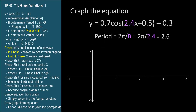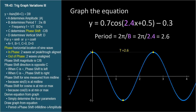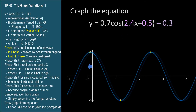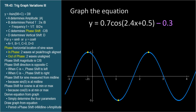Period equals 2 pi over b, and b equals 2.4, so the period is 2.6. We're graphing the cosine function, so before applying the phase shift, there will be a peak at x equals zero and another at x equals 2.6. The trough will be midway between at x equals 1.3. We'll sketch this curve lightly. The phase shift is negative c over b: negative 0.5 divided by 2.4 is negative 0.21. We shift to the left by 0.21, so the peaks move to negative 0.21 and 2.4, and the low point shifts to about 1.1. Before the vertical parameters are applied, the wave looks like this.